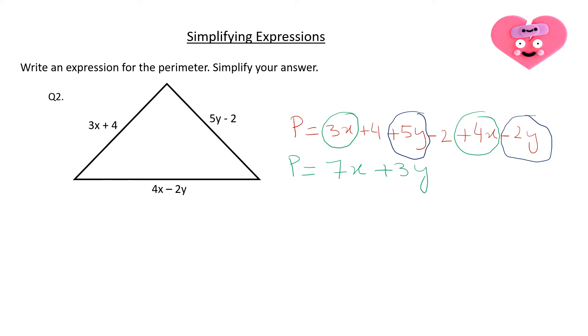So I will write 3y over here. Next we have plus 4 take away 2 is plus 2. So this is the expression for the perimeter of the triangle.